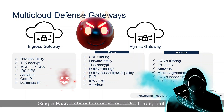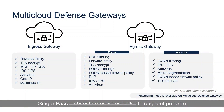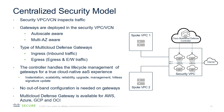In the centralized security model, there's a centralized security VPC where multi-cloud defense deploys the required gateways. The security VPC or VCN inspects traffic; gateways are deployed in those VPCs or VCNs and are auto-scale and multi-availability-zone aware. You can deliver multiple types of defense gateways — ingress, egress, or east-west. The controller handles the entire lifecycle of the gateways: instantiation, scalability, reliability, upgrades, management, and signature updates. No out-of-band configuration is needed on the gateways.